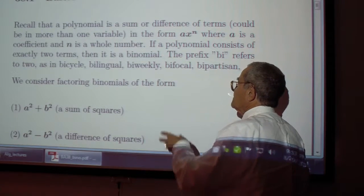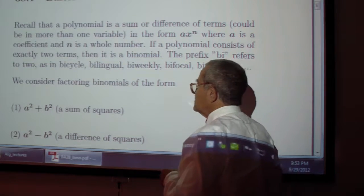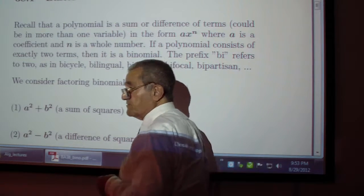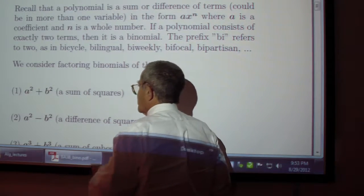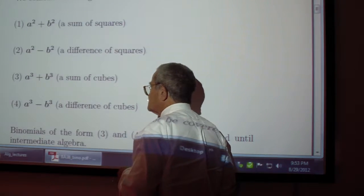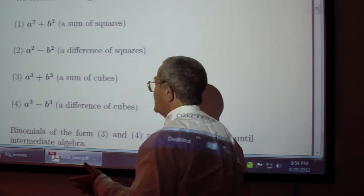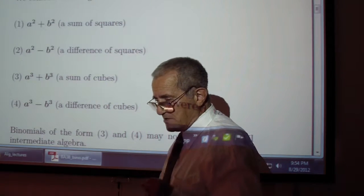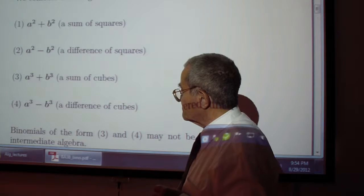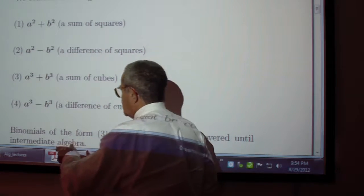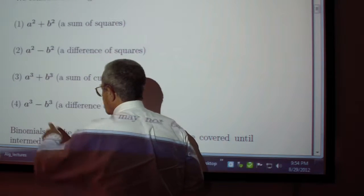We consider factoring binomials of the form a squared plus b squared, which cannot be factored as a rule, a squared minus b squared, a cubed plus b cubed, a cubed minus b cubed, or in general, a to the 2n plus 1, plus or minus b to the 2n plus 1. In other words, a and b are to an odd power, plus or minus.